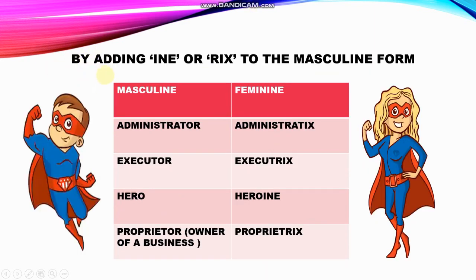The next type is forming the feminine by adding INE or RIX to the masculine form. Administrator plus RIX becomes administratrix. Executor plus RIX becomes executrix. Hero plus INE becomes heroine. Proprietor plus RIX becomes proprietrix.